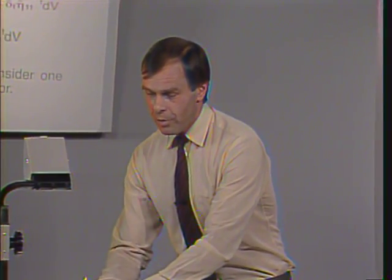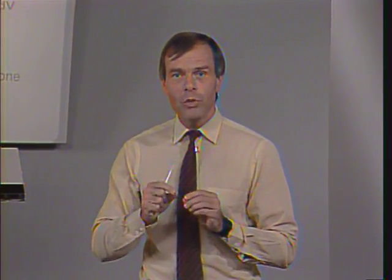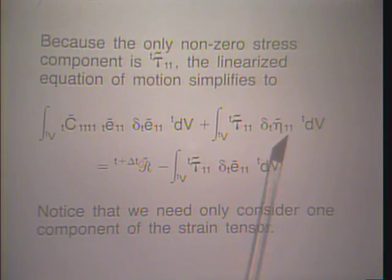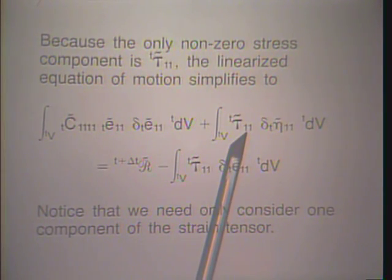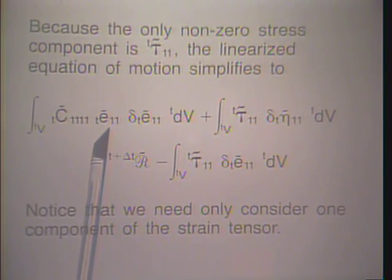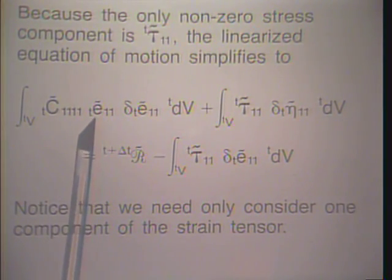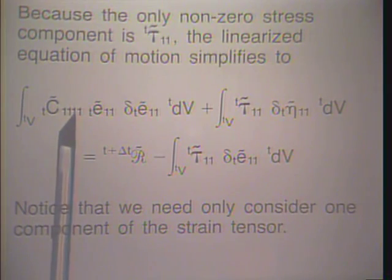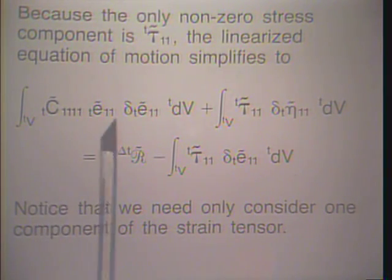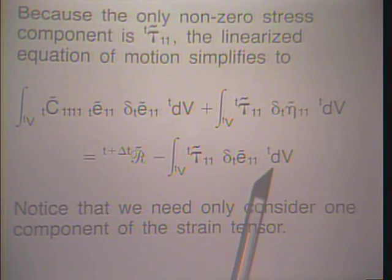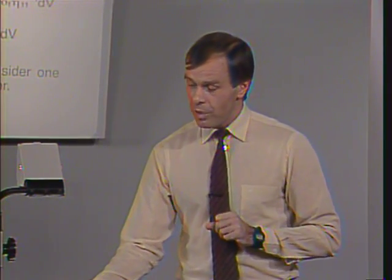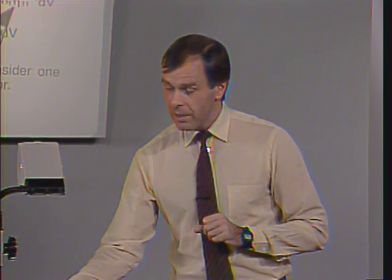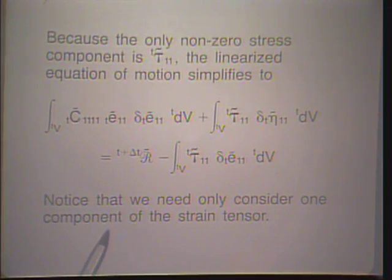Because for the truss the only non-zero stress is the stress along the length of the truss — acting normally to the cross section — we can simplify the general equation considerably. The only non-zero stress is tau-curl-11, and the only small strain that will cause stress is e-curl-11, with the t on the left-hand side referring to the configuration at time t. So the very general equation reduces to a much simpler equation. We now evaluate these quantities using the finite element interpolation.